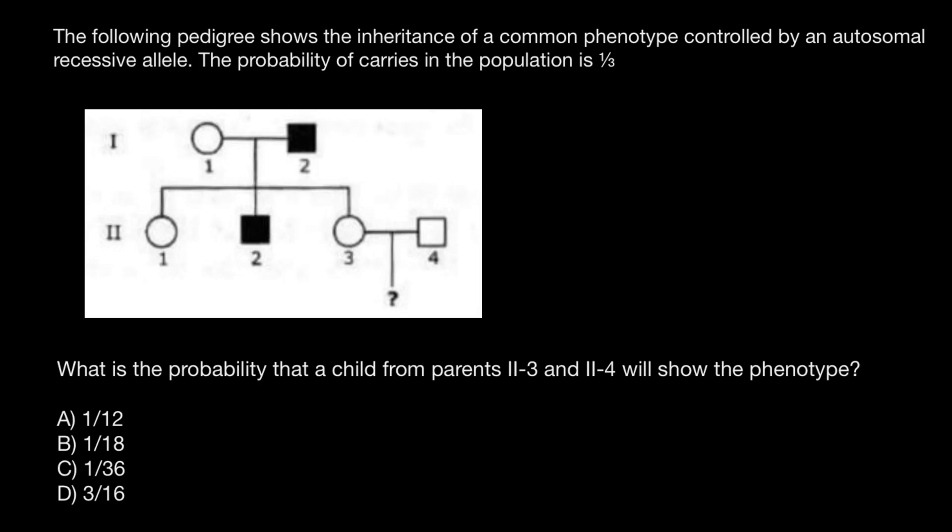Hello and welcome to Nikolai's genetics lessons. Today's problem I got from one of my subscribers. The following pedigree shows the inheritance of a common phenotype controlled by an autosomal recessive allele.